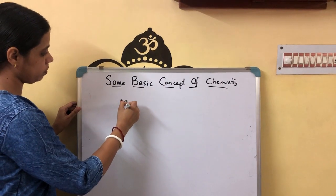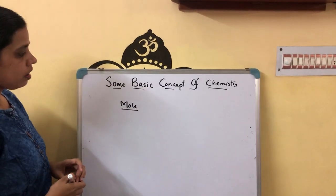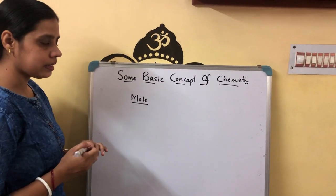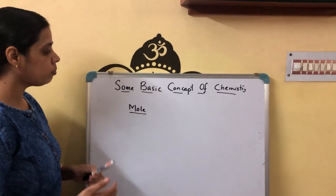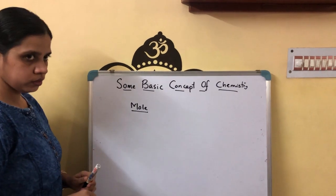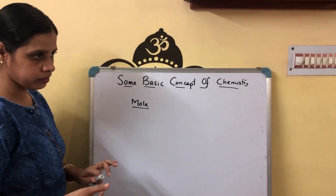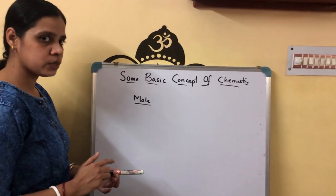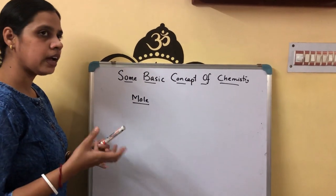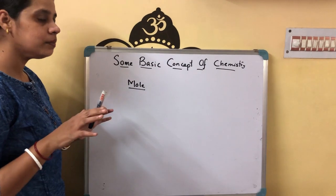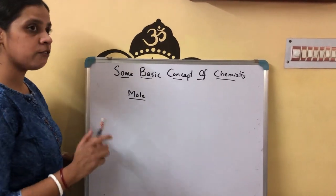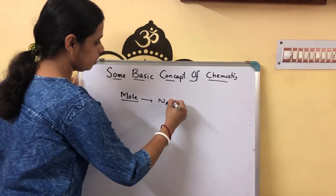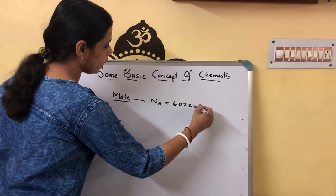Next, I will explain an important topic — mole. Mole relates to the number of atoms, ions, or molecules present in a compound. In one mole, the number of atoms, molecules, or ions present is given by Avogadro's number, represented by N. Its value is 6.022×10²³.